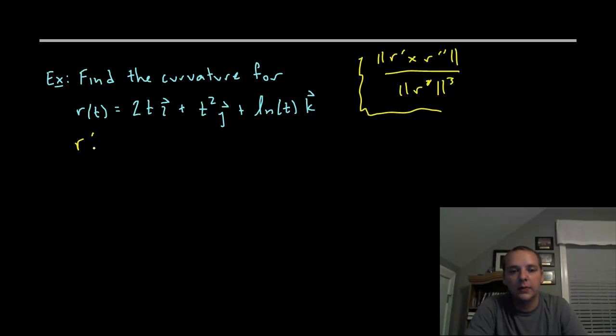There's r. So r prime will be, I'm going to write this in component form, 2 derivative of 2t, comma 2t, comma 1 over t. I'm not going to give a lot of details as to why these derivatives are what they are. R double prime would be 0, 2, negative 1 over t squared. That would be the first and second derivatives.